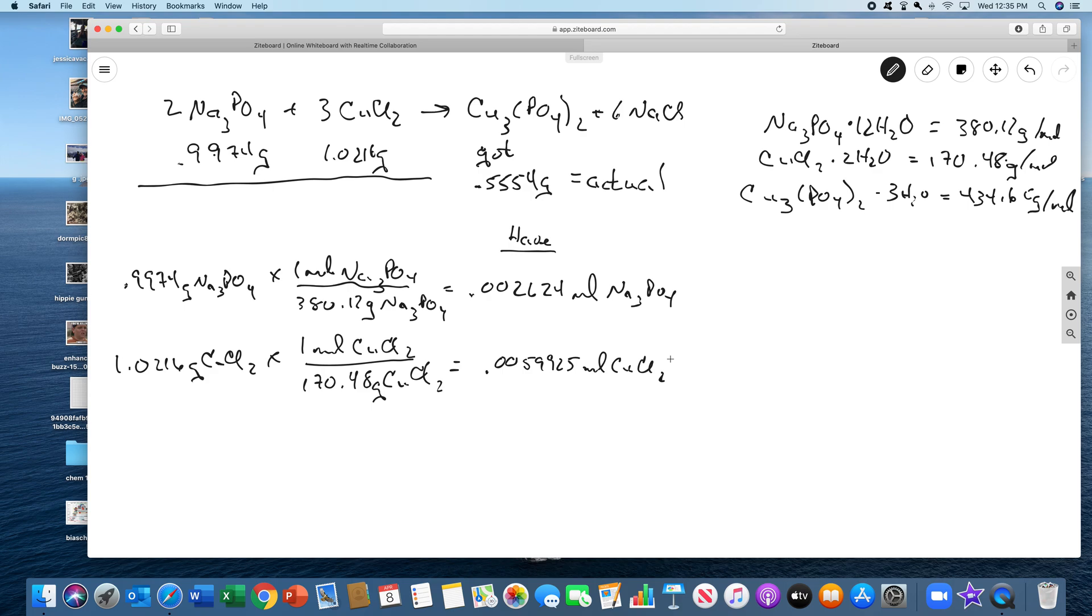To determine the limiting reactant, we pick one of the reactants and find out how much of the other we need. Using the balanced equation, I need 3 moles of copper chloride for every 2 moles of sodium phosphate. If I'm going to use up all the sodium phosphate, I need 0.003936 moles of copper chloride. I have 59 and I need 39, so I have excess copper chloride. That means sodium phosphate is my limiting reactant.